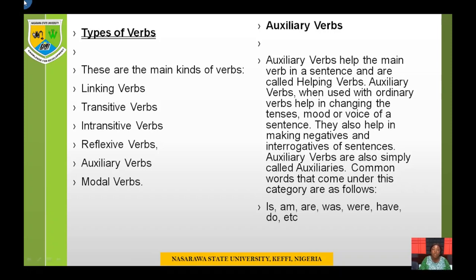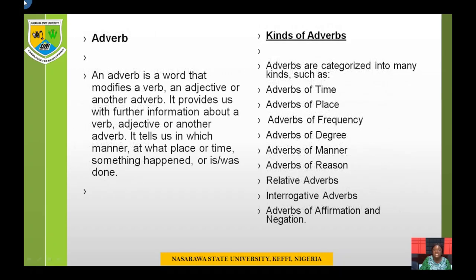Auxiliary verbs help the main verb in a sentence and are called helping verbs. When used with ordinary verbs, they help in changing the tenses, mood, or voice of a sentence. They also help in making negatives and interrogatives of sentences. Auxiliary verbs are also simply called auxiliaries. Common words in this category include: is, am, are, was, were, have, do, etc.